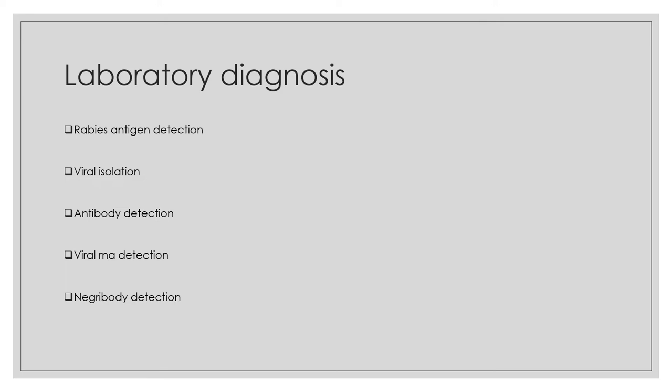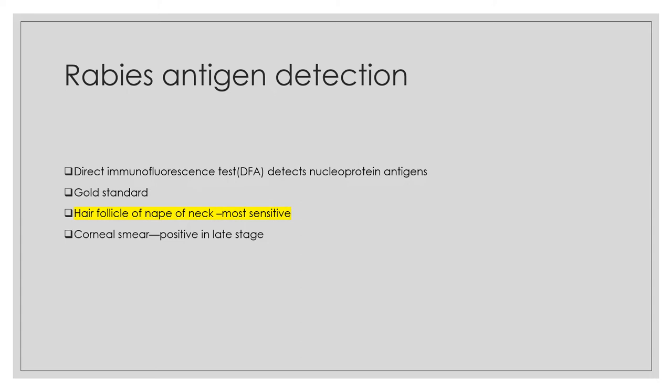For laboratory diagnosis of rabies, methods include rabies antigen detection, antibody detection, virus isolation, viral RNA detection, and Negri body detection. The most important test is the direct immunofluorescence assay (DFA), which detects nucleoprotein antigens using specific monoclonal antibodies tagged with fluorescent dye. This is the gold standard test for diagnosing rabies.